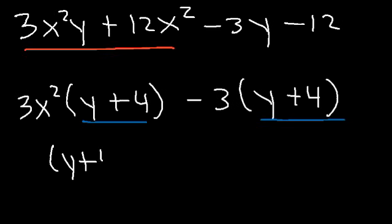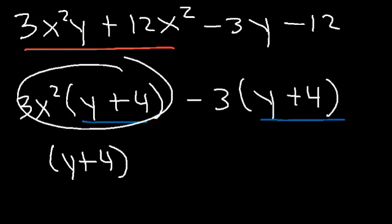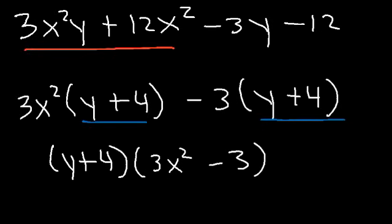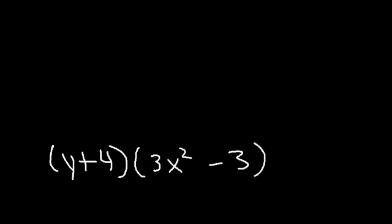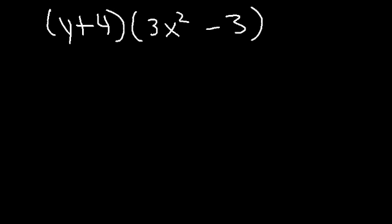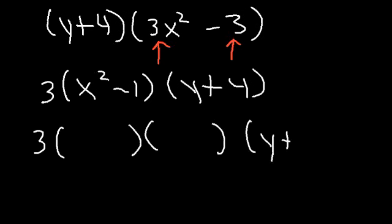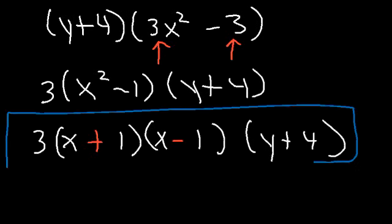We have the common factor y plus 4. Taking that out gives y plus 4 times 3x squared minus 3. We can simplify further — notice the common factor of 3: 3x squared divided by 3 is x squared, and negative 3 divided by 3 is negative 1. We can then factor x squared minus 1 using the difference of squares: the square root of x squared is x, the square root of 1 is 1, one positive and one negative — giving the final answer y plus 4 times 3 times x plus 1 times x minus 1.